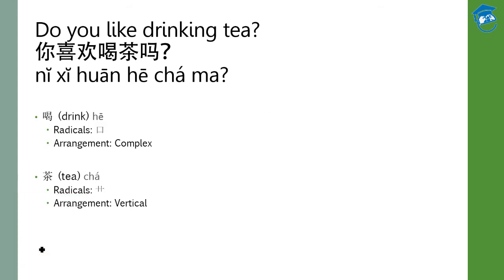So the whole sentence 你喜欢喝茶吗 should be very straightforward. It's just to say: you like drinking tea. As it ends with 吗, it means this is a yes or no question. In English translation, you would translate it as: do you like drinking tea?